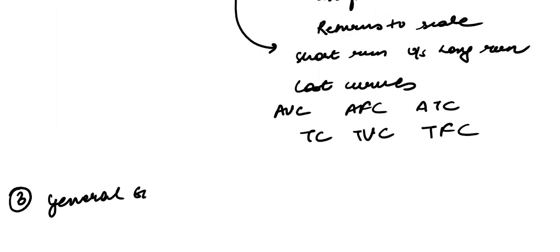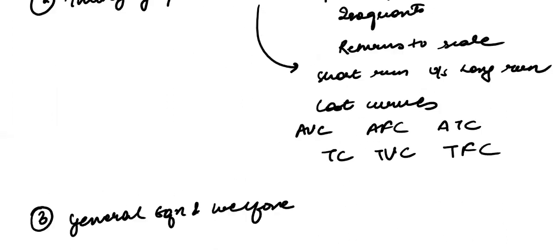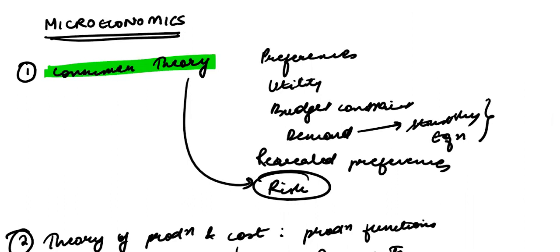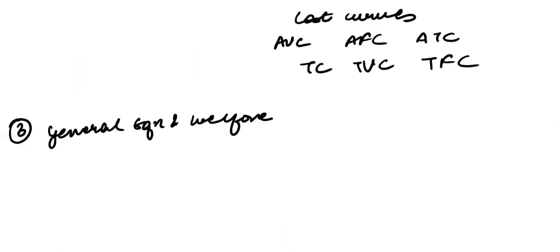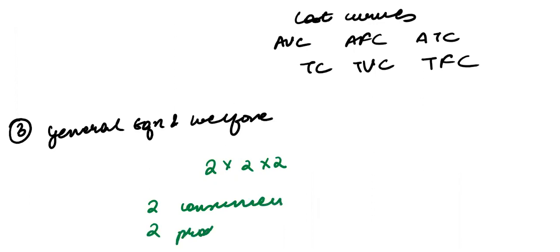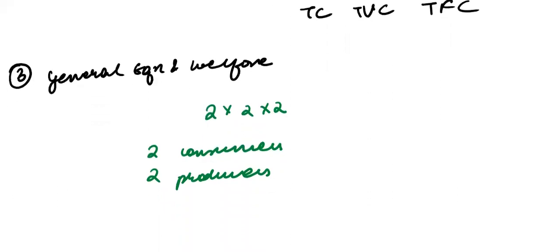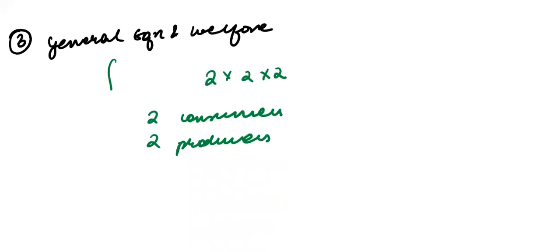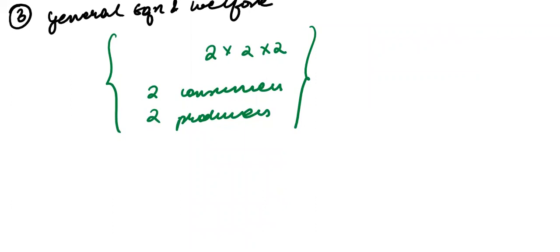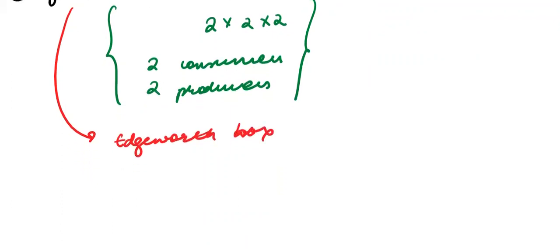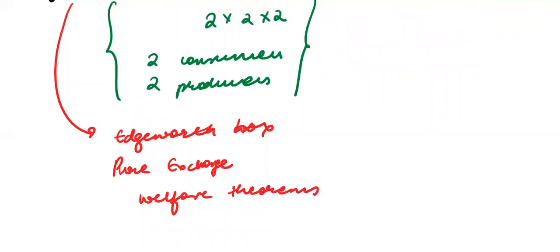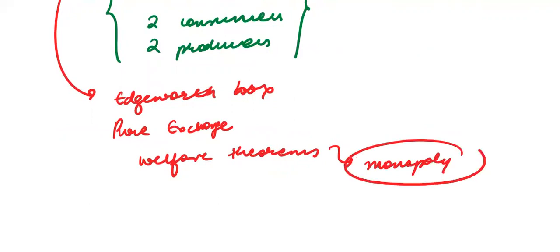The third topic is general equilibrium and welfare, which can only be approached after understanding consumer theory well. I will introduce the two-by-two-by-two model — two consumers, two producers, two products, and two inputs together. We will cover the Edgeworth box, which comes every year, the pure exchange scenario, the two important welfare theorems, and cases when welfare theorems are not satisfied.